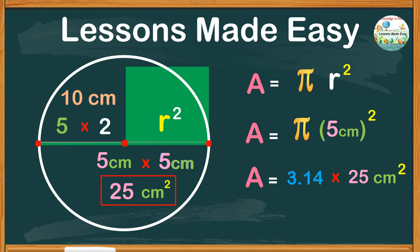Then finally multiply 3.14 with 25. The final product would be 78.5 square centimeters. So the area of this circle is 78.5 square centimeters.